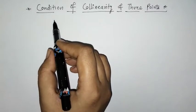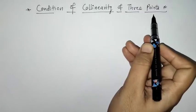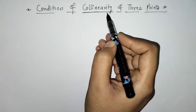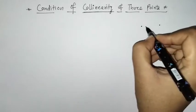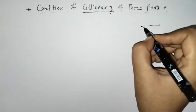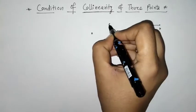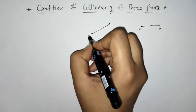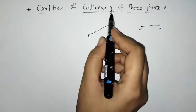Hello everyone, welcome to Unlock Maths. Today we are going to discuss the condition of collinearity of three points. When we think about collinearity, we know that two points are always collinear — that means we can find a straight line between any two points.